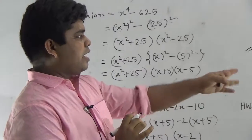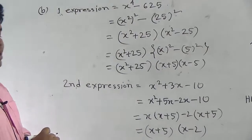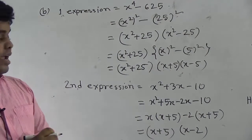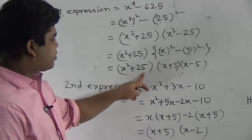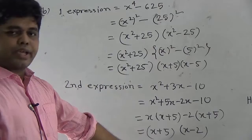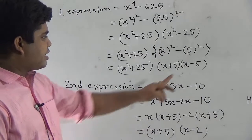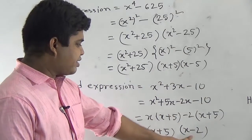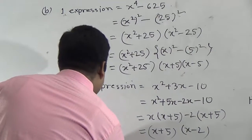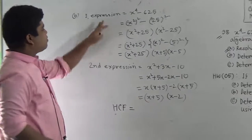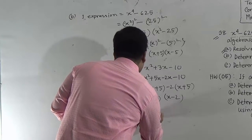Now we shall find out the HCF of the two expressions. HCF means we take the common term only. Notice: x squared plus 25 is not present in the second expression. x plus 5 is present in both expressions. x minus 5 is not present in the second expression. x minus 2 is not present in the first expression. So the HCF is the only factor present in both expressions — that means x plus 5. So x plus 5 is the required HCF.